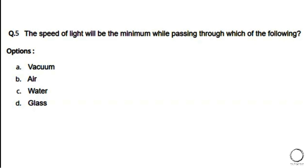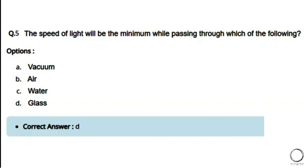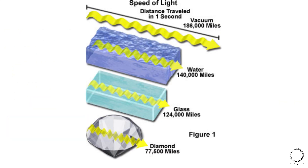Next: The speed of light will be minimum while passing through which of the following? Options: a) vacuum, b) air, c) water, d) glass. The right answer is option D — glass. As noted, there is no diamond in the options, hence the right answer is glass.